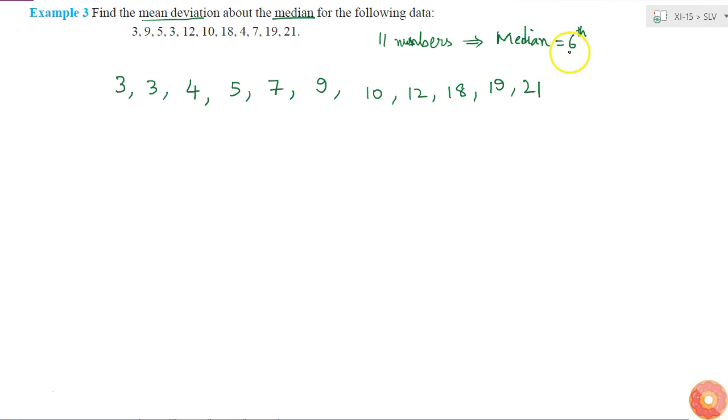ascending order. What is my median? The sixth number. So this is my median M. Now I have to find the mean deviation about the median. I'll call it capital M. What will that be?